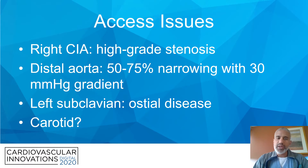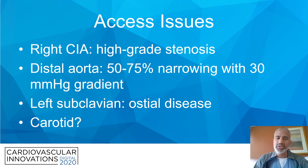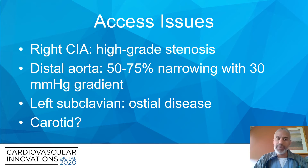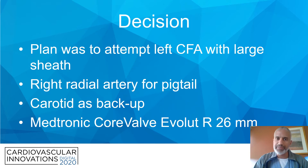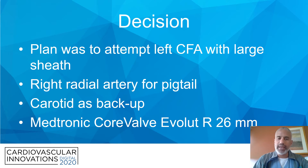The access issues: the right common iliac artery had a high-grade stenosis. The distal aorta showed a 50 to 75 percent narrowing with a 30 millimeter gradient. The left subclavian had osteal disease. We decided that if we needed secondary access, the carotid artery might be suitable. Our initial plan was to attempt the left common femoral artery with a large sheath, a right radial artery for the pigtail, and a carotid artery as a backup.